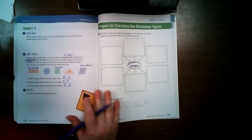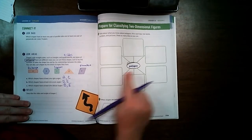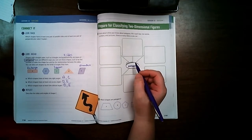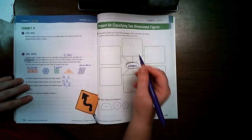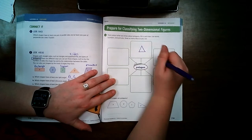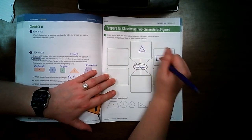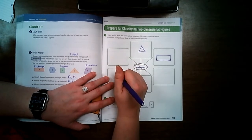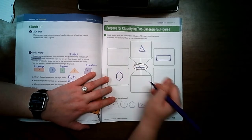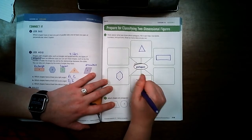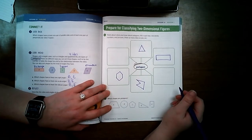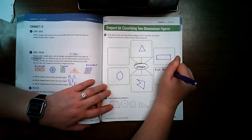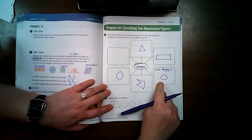But our vocabulary again for today is polygon. And we know that these are all polygons. Okay? So what do we know about polygons? Well, we know that a polygon could be a triangle, a rectangle. It could be a shape like this. It could even be a weird shape. But what is not a polygon is a circle. Circles are not polygons.